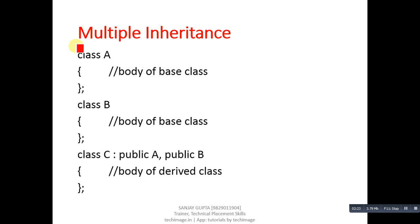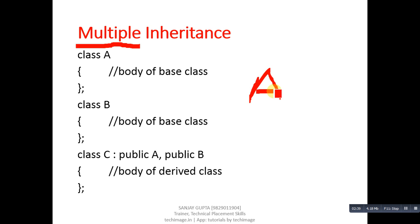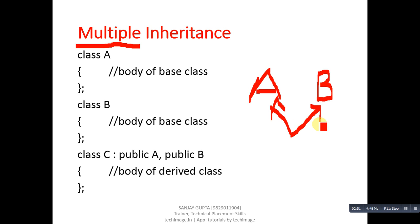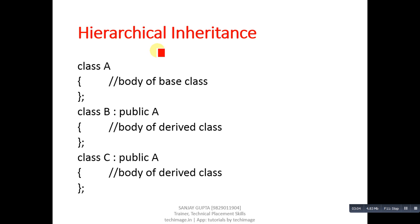The third type of inheritance is multiple inheritance. In this case, A class and B class are both base classes, and both are being inherited by C class. In the diagram, A and B are defined at the same level, and features of both A and B are inherited by C class. So in multiple inheritance, more than one base class and a single derived class are involved.